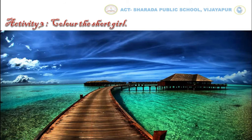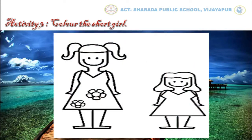So kids, now let us do our third activity — that is, color the short girl. Kids, here we can see pictures of two girls. In these two girls, you need to identify the short one. Now tell me kids, who is shorter here?